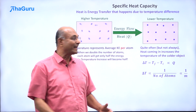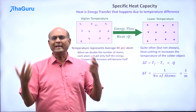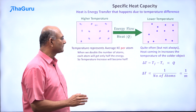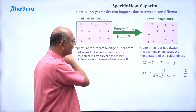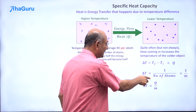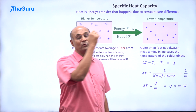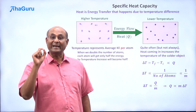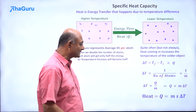So the increase in temperature is inversely proportional to the mass. We know that delta T is directly proportional to Q and inversely proportional to M. Combining these two, delta T is proportional to Q divided by M. Reversing this, Q is directly proportional to M times delta T. We can replace the proportionality with a constant — the letter S. So we write: heat Q is equal to mass times S times delta T.